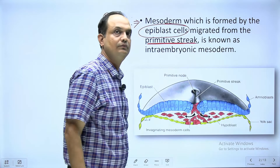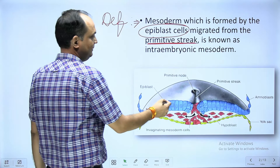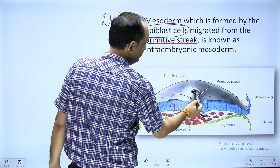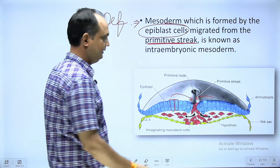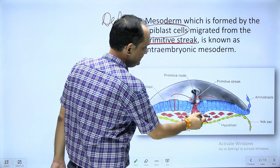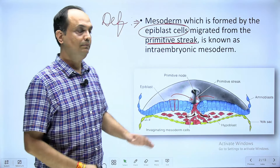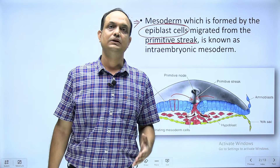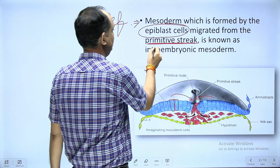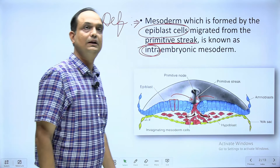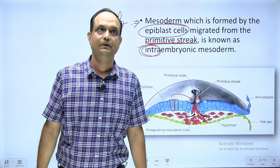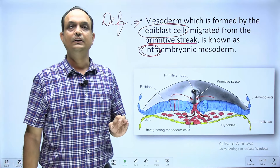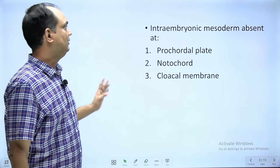As explained in the gastrulation class, the epiblast cells are long columnar cells that start to migrate towards the primitive streak. From the primitive streak region they detach and come into an area below the epiblast, where they form a new germ layer known as the mesoderm. So the intra embryonic mesoderm arises from epiblast cells migrating through the primitive streak, forming your definitive mesoderm.